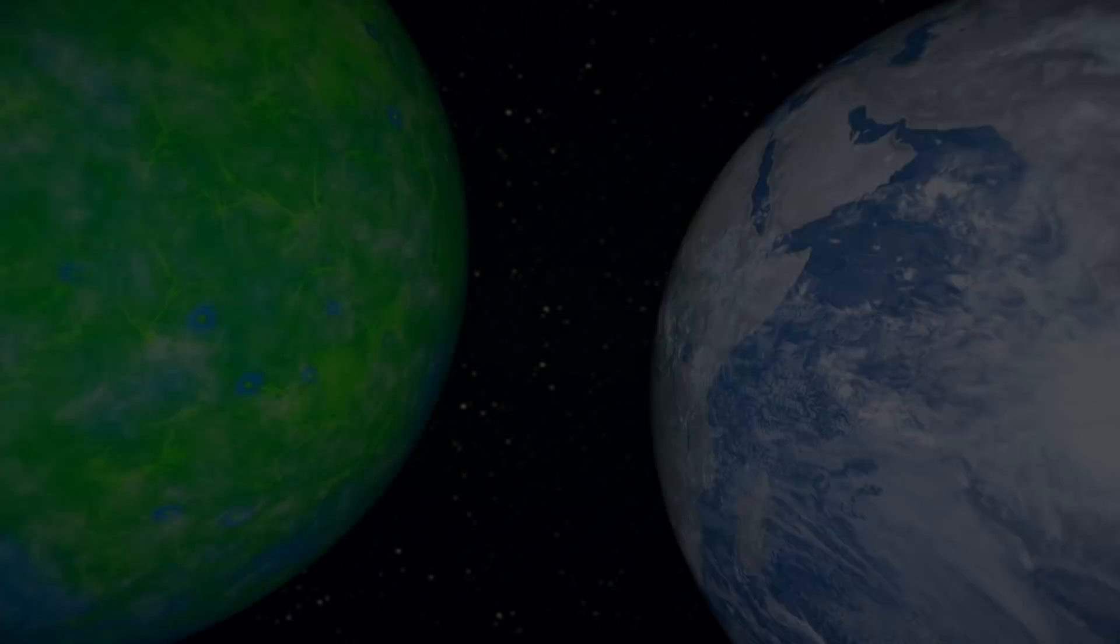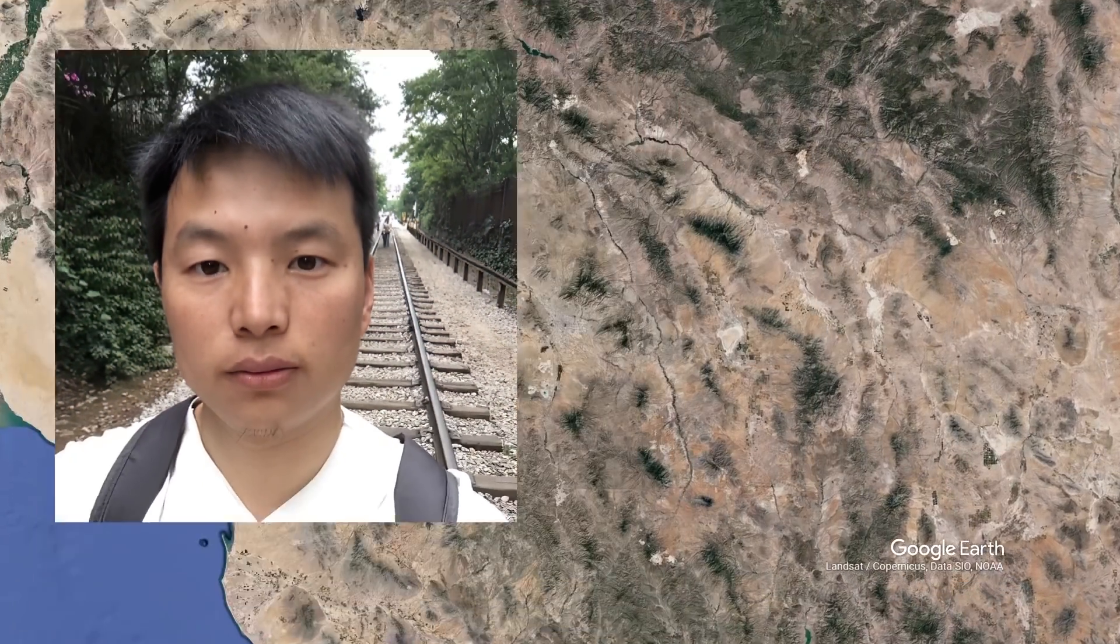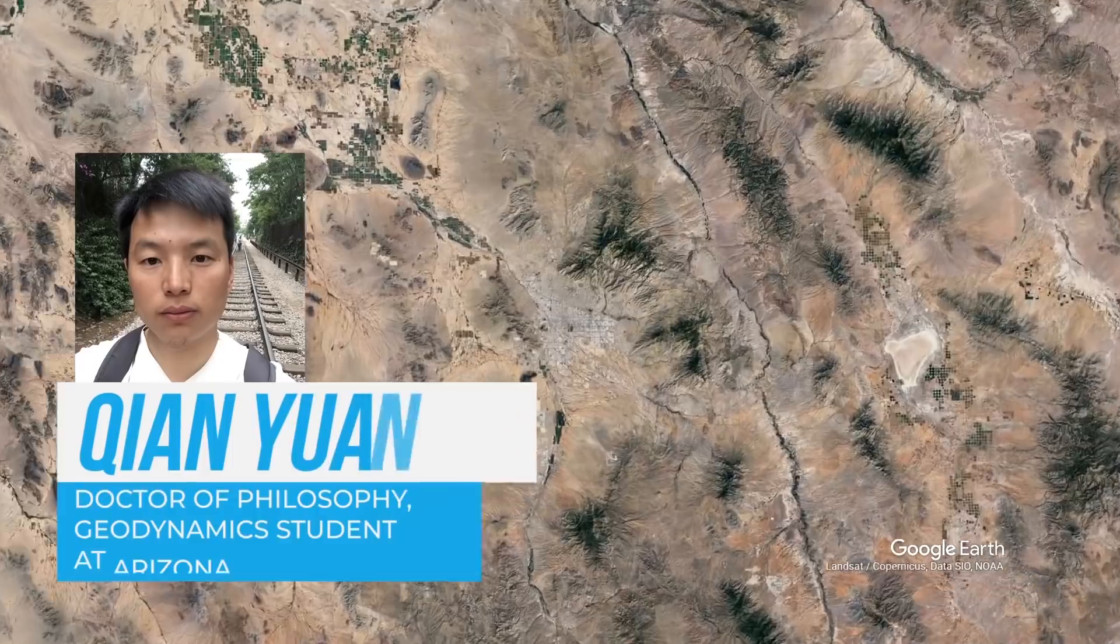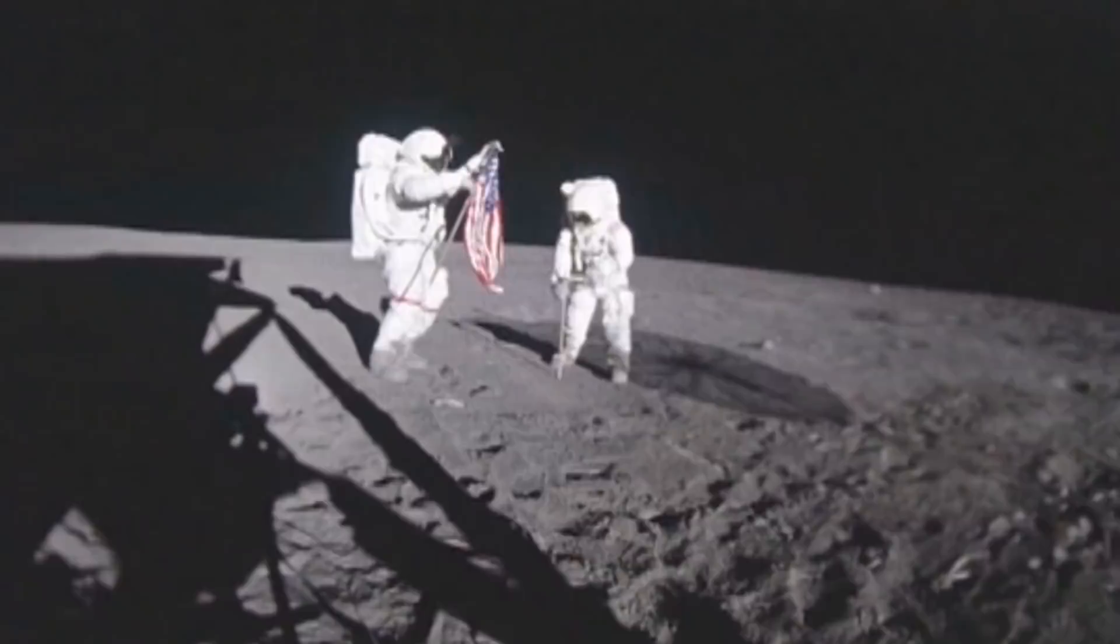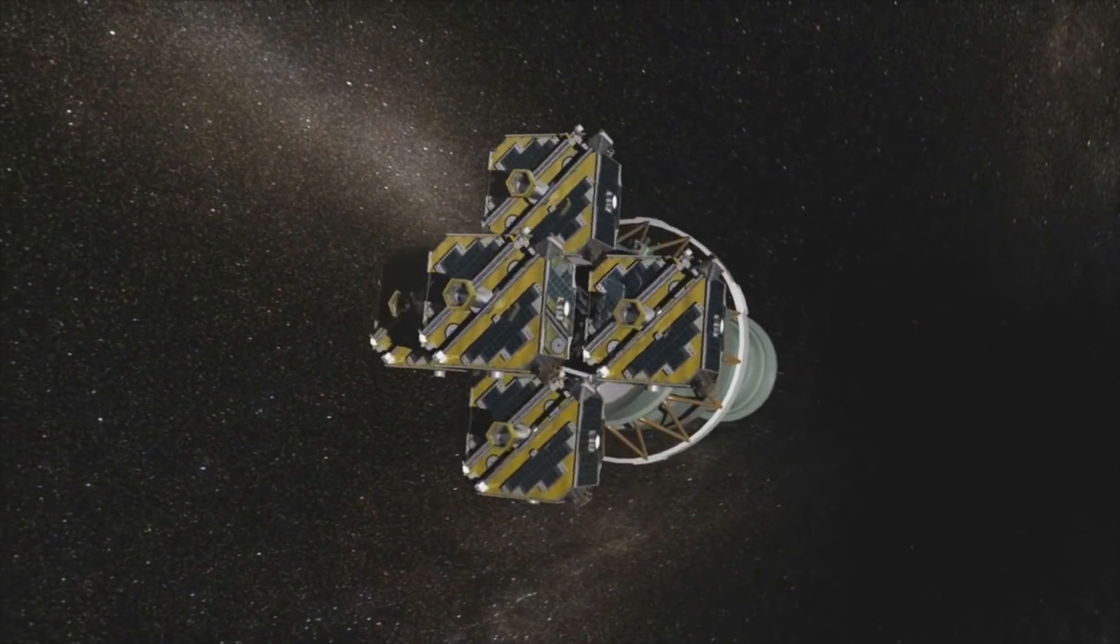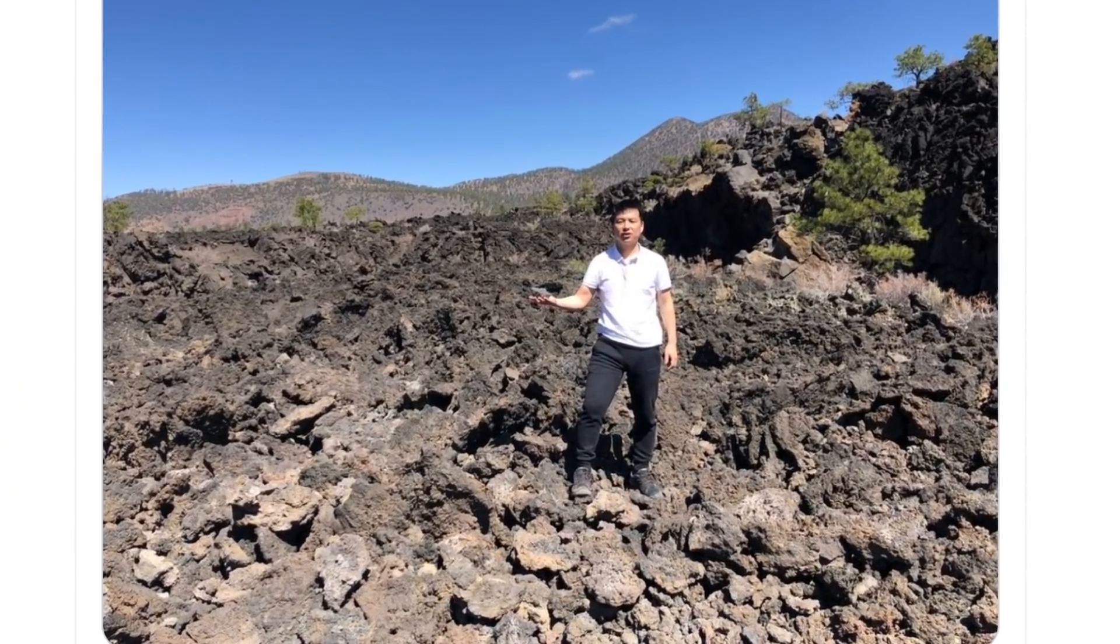It would be incredible if there was at least some evidence for this. But a Doctor of Philosophy geodynamic student at Arizona State University, Qian Yuan, found them. While the others were flying to the moon, sending out probes, Qian Yuan was the first to think of looking under his feet.